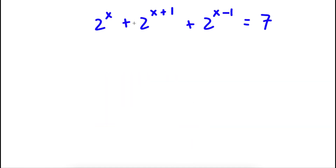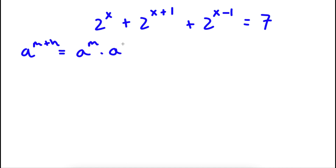Alright, so for the first bonus problem I have 2 to the power of x plus 2 to the power of x plus 1 plus 2 to the power of x minus 1 is equal to 7. Now, if I have something in the form a to the power of m plus n, this is equal to a to the power of m times a to the power of n. So 2 to the power of x plus 1 can be rewritten as 2 to the power of x times 2 to the power of 1.